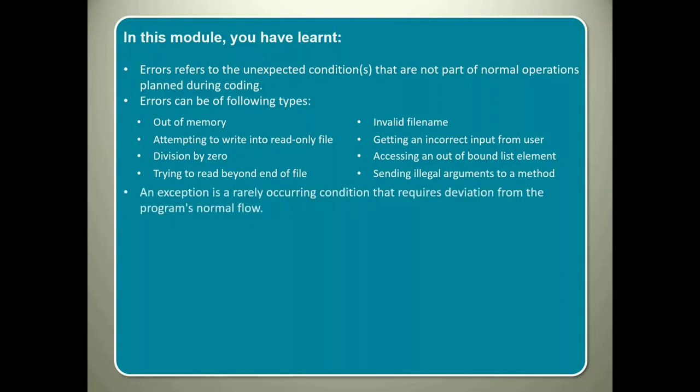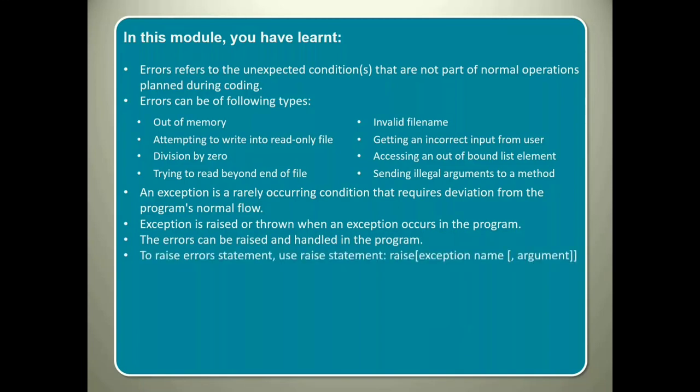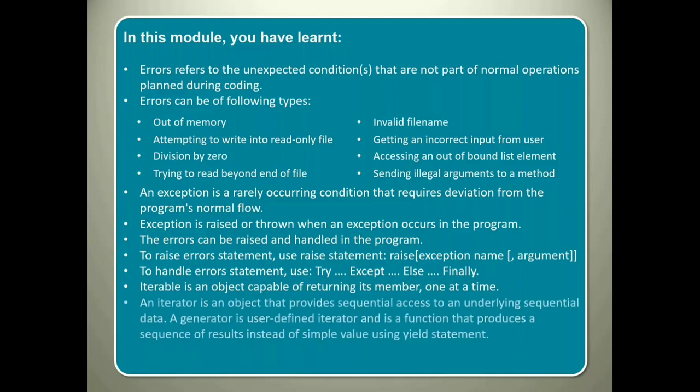An exception is a rarely occurring condition that requires deviation from the program's normal flow. Exception is raised or thrown when an exception occurs in the program. You can raise and handle the errors in your program. To raise error statement, you use raise statement. To handle error statement, you use try, accept, else, finally. Iterable is an object capable of returning its member one at a time. An iterator is an object that provides sequential access to an underlying sequential data. The underlying sequence of data is not stored in memory. Instead, it is computed on demand. A generator is user-defined iterator and is a function that produces a sequence of results instead of simple value using yield statement.